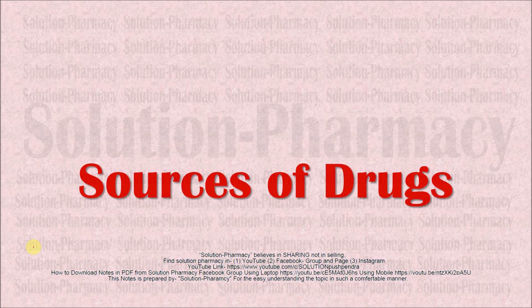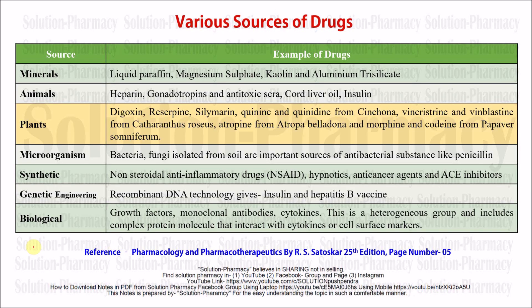So let's start with the different sources of drug. We can classify the sources of drug as: mineral, animal, plant, microorganism, synthetic, genetic engineering or biotechnology, and biological products.